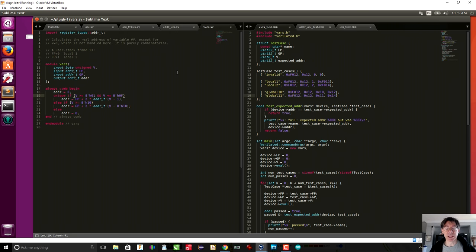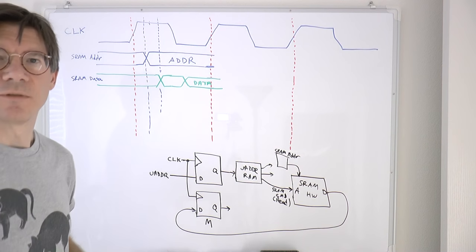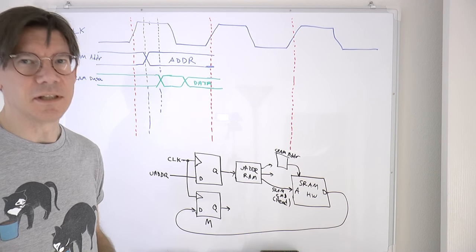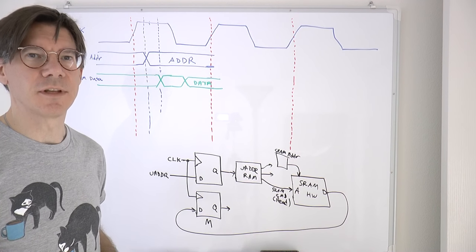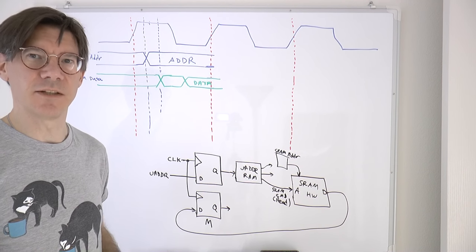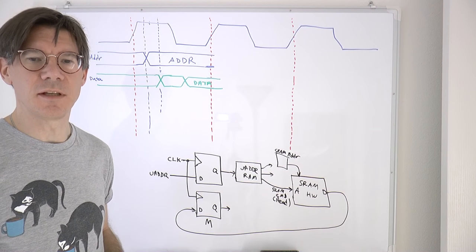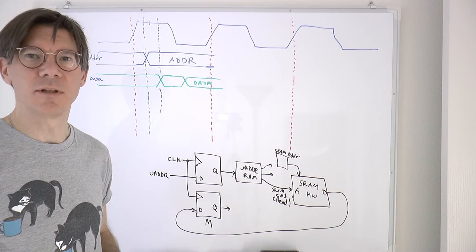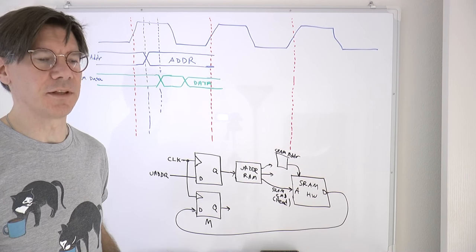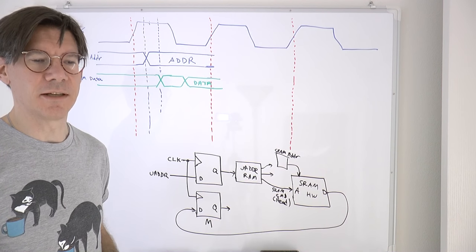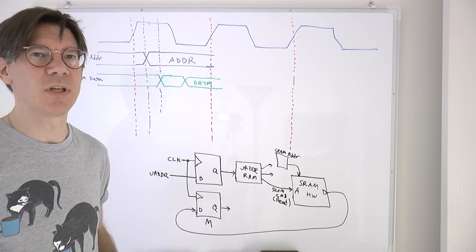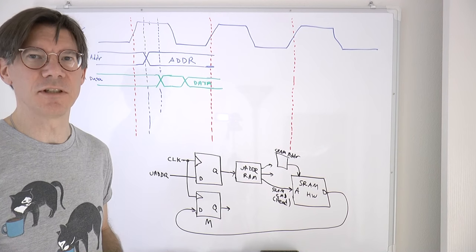The next thing we're going to talk about is the memory interface, and that's going to be a lot more complicated. If we take a look at the datasheet for the SRAM, you can go to the reference card I built, and on the right-hand side there is a list of SRAM pins along with a link to the datasheet.